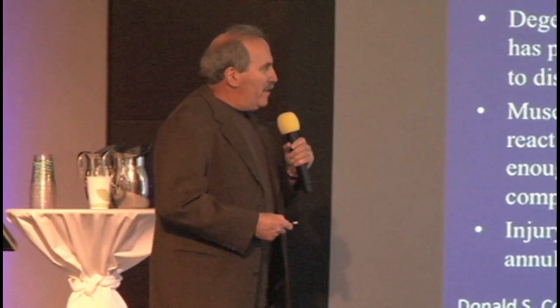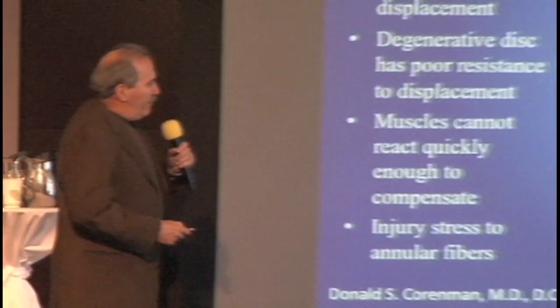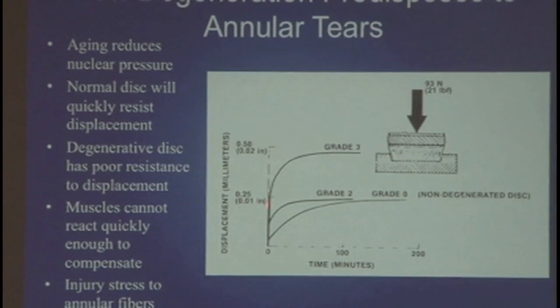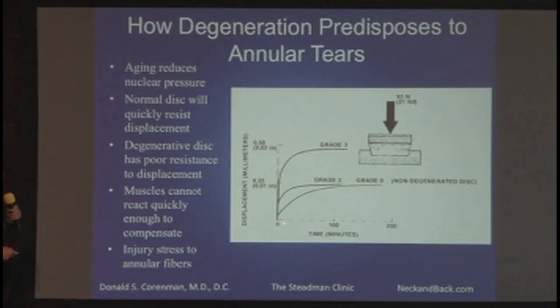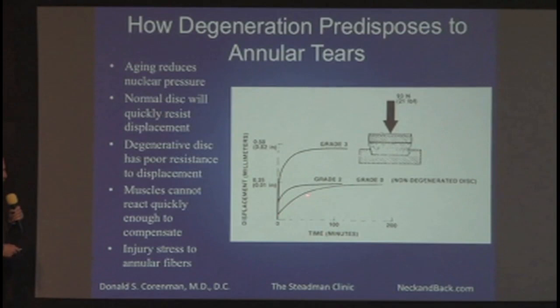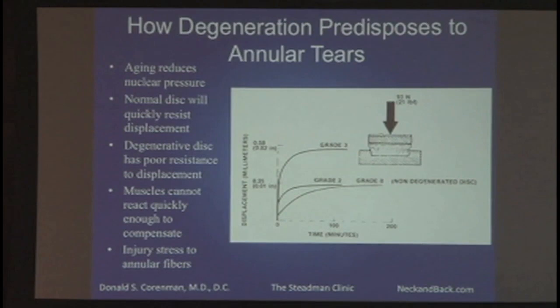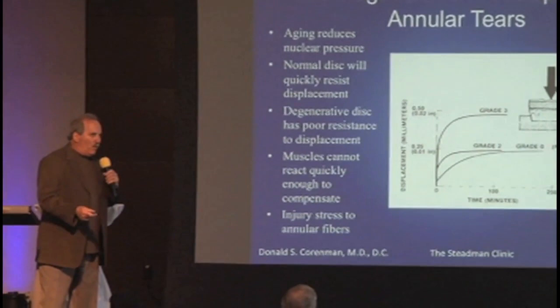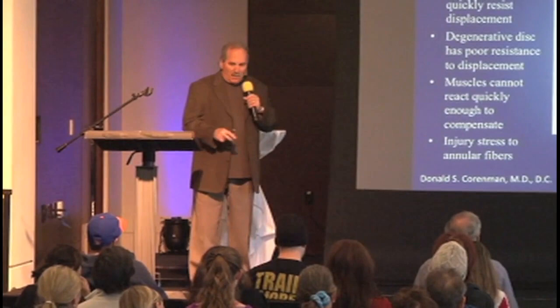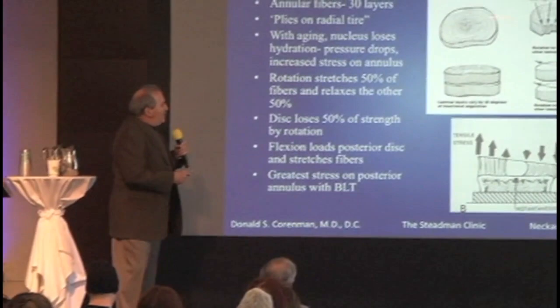This study shows what happens when discs degenerate — they applied a normal newton-load force and measured displacement from normal to grade 3 degeneration over time. A normal non-degenerative disc doesn't displace immediately but creeps a little over time. A typical degenerative disc immediately displaces and then displaces much more over time. If you've got a degenerative disc, you can't compensate normally by strengthening muscles. What you have to do is learn to lift, bend, and twist in a proper fashion.